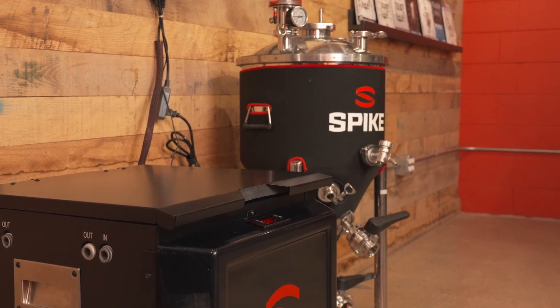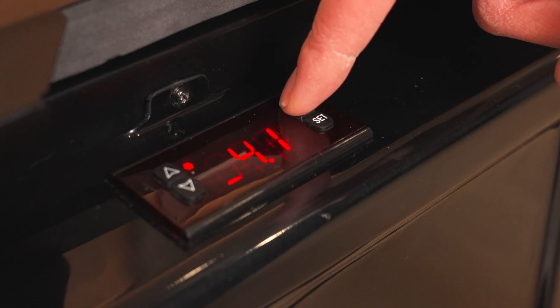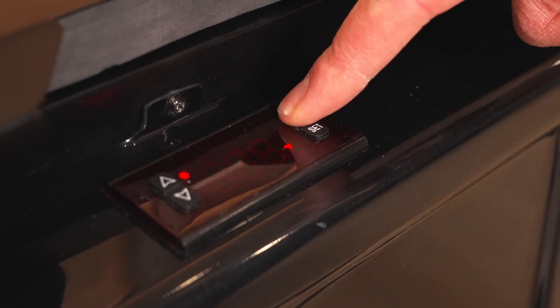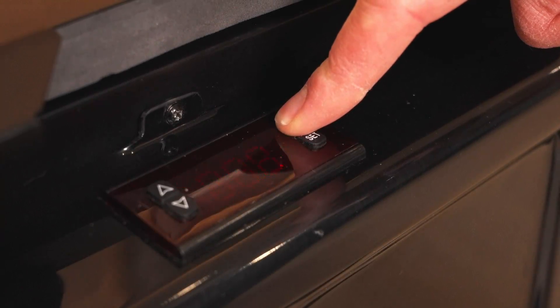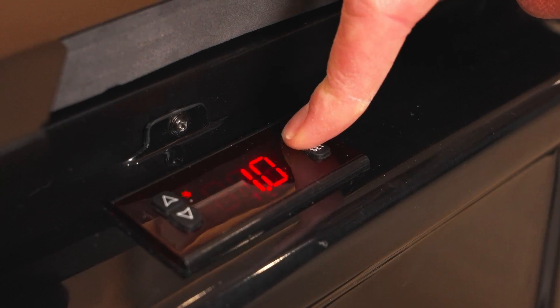By default, your controller will display in Fahrenheit. If you'd like to change to Celsius, press and hold the C F button for three seconds. The temperature units will switch to Celsius. Follow the same process if you'd like to switch back to Fahrenheit.